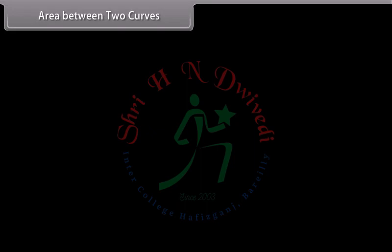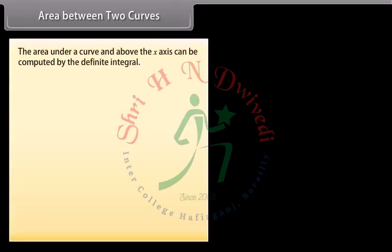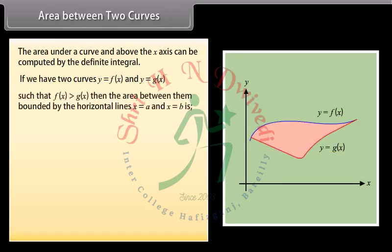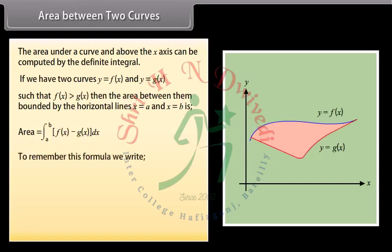Area between two curves. The area under a curve and above the x-axis can be computed by the definite integral. If we have two curves y = f(x) and y = g(x) such that f(x) ≥ g(x), then the area between them bounded by the lines x = a and x = b is: Area = ∫[a to b] [f(x) − g(x)] dx. To remember this formula, we write: Area = ∫[a to b] (top − bottom) dx.